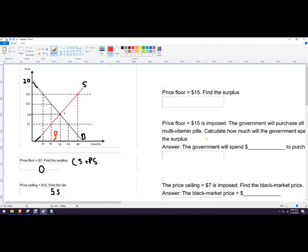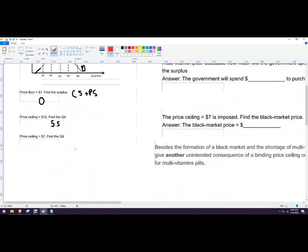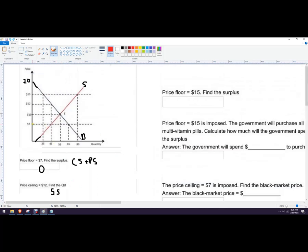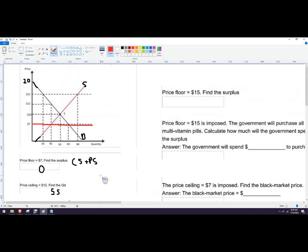Price ceiling of $7, find the quantity demanded. So just follow this. You can draw a line right on your graph, $7 over to 45. That's the quantity supplied, but then follow this all the way over here. That's 65. That means 65 units the buyers want to buy.